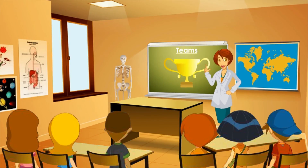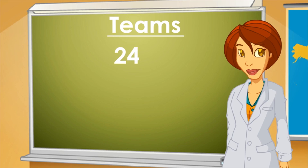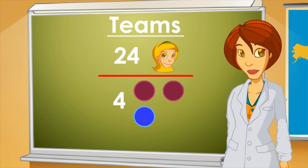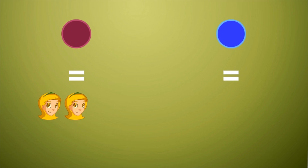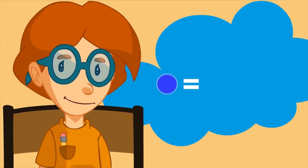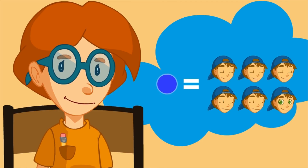Children, I need your help to make the teams for this year's tournaments. How many teams do we need to make? There are 24 students altogether. I think 4 groups with boys and girls will be fine. Each group must have the same number of people. Well, each group should have 5 or 6 children.